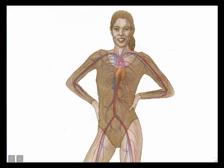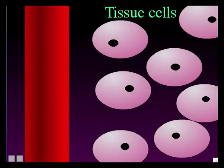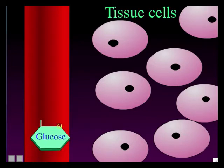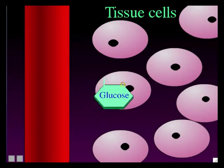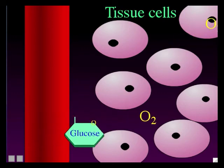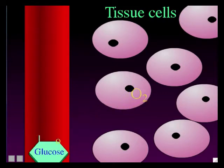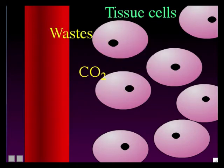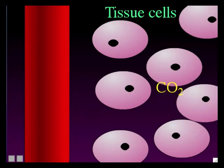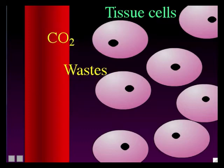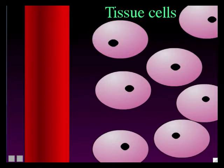Imagine we zoom in on one of her blood vessels — let's say that vertical red artery. Here's the artery, and just outside it are some cells. Two of the most important things that the blood is transporting are glucose and oxygen so cells can use them for cellular aerobic respiration. As the cells do cellular aerobic respiration, they make the waste product carbon dioxide, and the blood has to take away the CO2. Cells also make other waste products like urea.